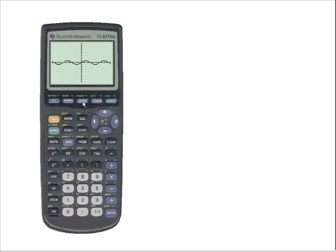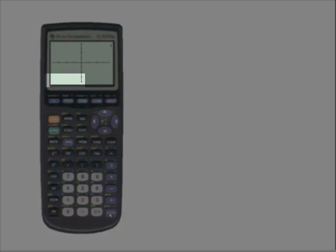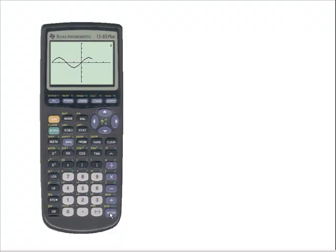So what I'm going to do is use the ZOOM button, and I'm going to use this ZTrig button, and what that will do is give me a good look in terms of y, in terms of my maximum value and my minimum value.